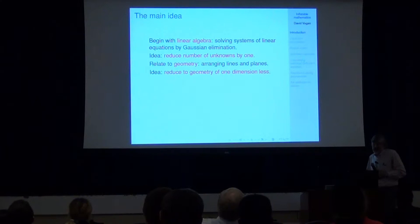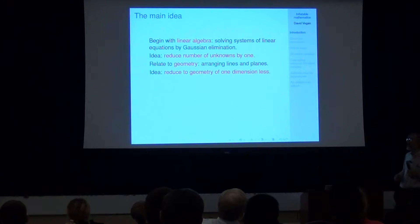reducing the number of unknowns by one is relating some geometry problem to a geometry problem in a smaller dimension, to make life simpler by making it lower dimensional. So here's a picture.